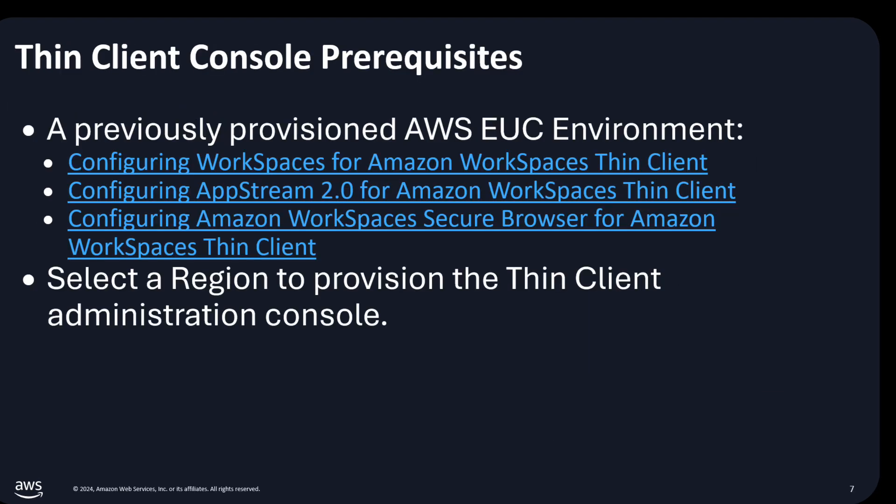For the Amazon Workspaces Thin Client Administrator console to work properly, your system must first meet specific requirements. I recommend that prior to provisioning a Thin Client, you provision one of the AWS EUC services: Workspaces, Amazon AppStream 2.0 desktops, or Amazon Workspaces Secure Browser. Walking through the provisioning of each of these services is outside the scope of this video; however, admin guides for each of these AWS EUC services are available online.